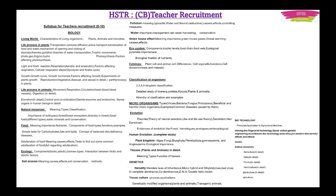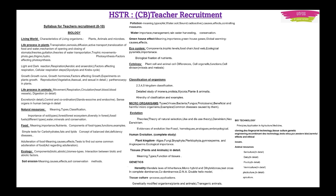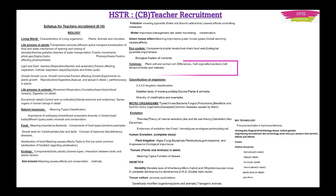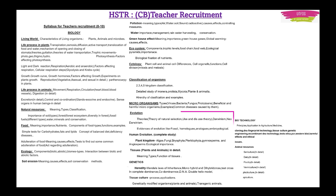Then you have Ecology, with general topics like soil erosion, pollution, water, and the greenhouse effect. Under Ecosystem, you have trophic levels, food web, food chain, ecological pyramids, and biological fixation of nutrients. Then Cytology covers plant cell and animal cell differences, mitosis, meiosis, and related topics. Classification of Organisms covers two, three, four, and five kingdom classifications in detail. Microorganisms covers general topics. Then there is Evolution, along with Human Evolution.